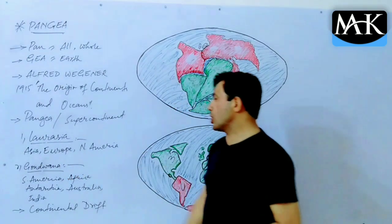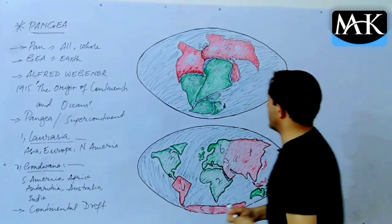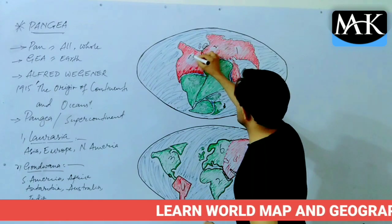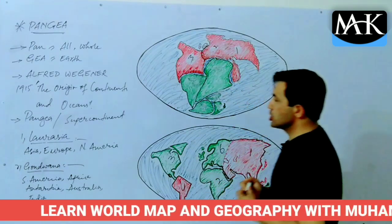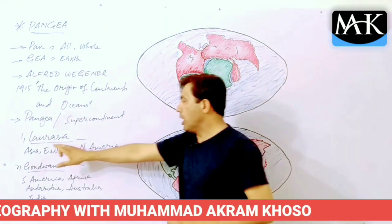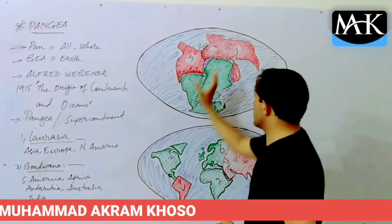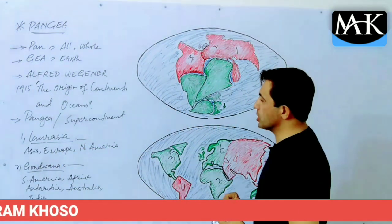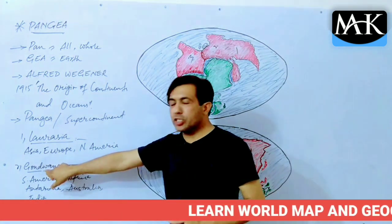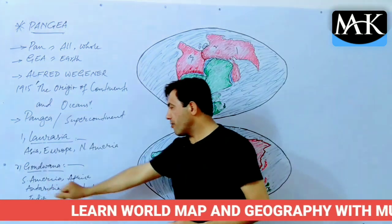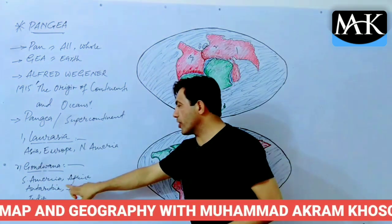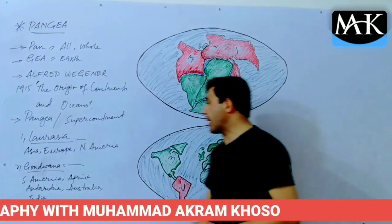He called the northern part Laurasia, where we have Asia, Europe, and North America. These three areas were known as Laurasia. The southern part was called Gondwana, which included South America, Africa, Antarctica, Australia, and India.